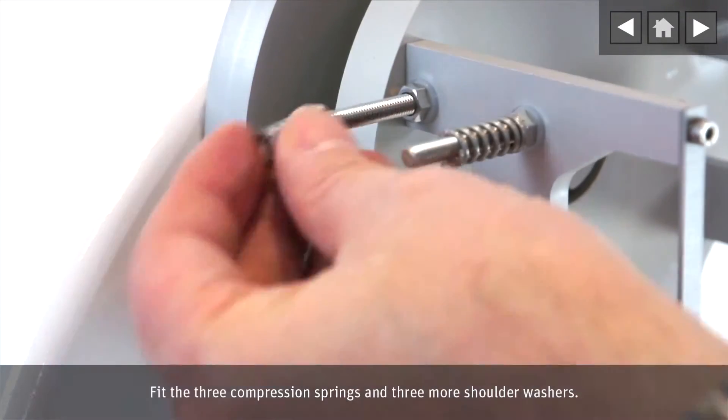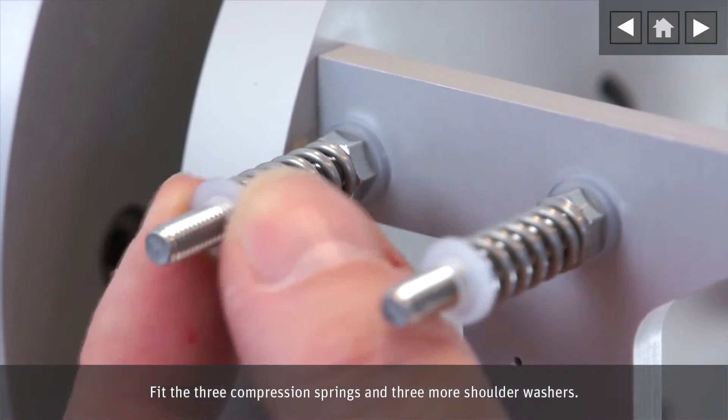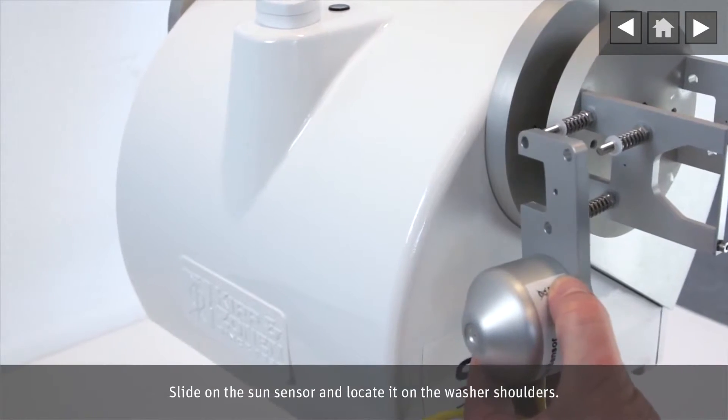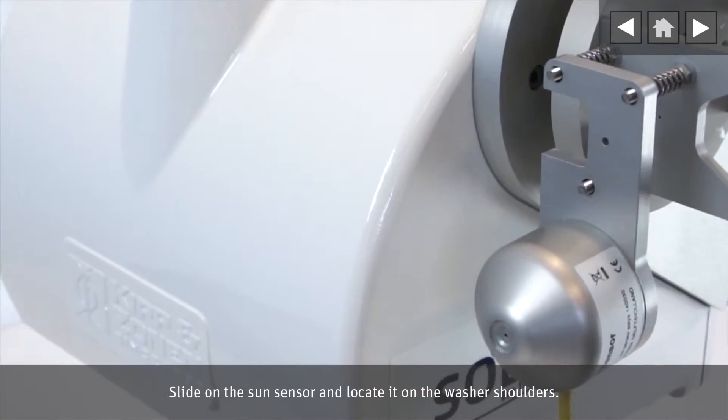Fit the three compression springs and three more shoulder washers. Slide on the Sun sensor and locate it on the washer shoulders.